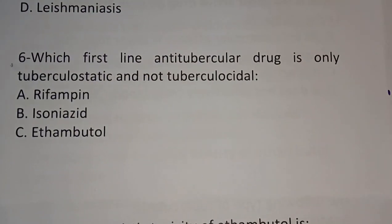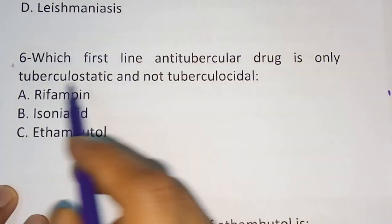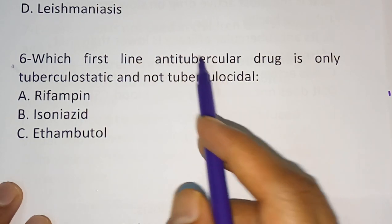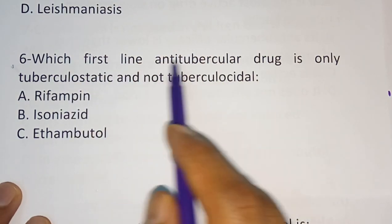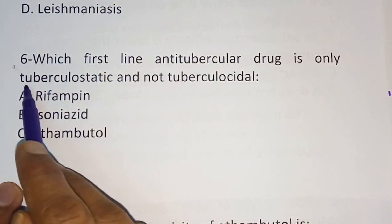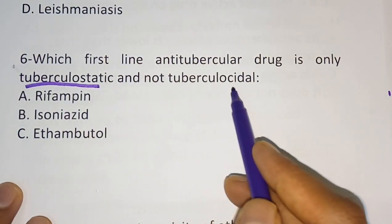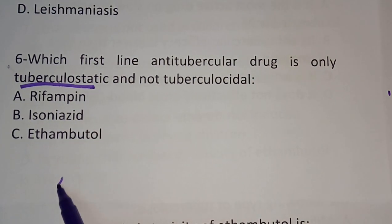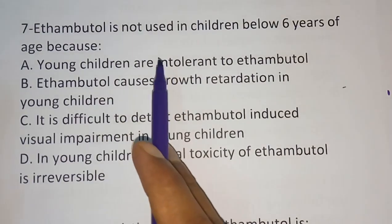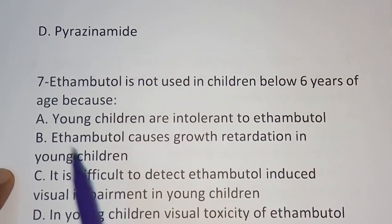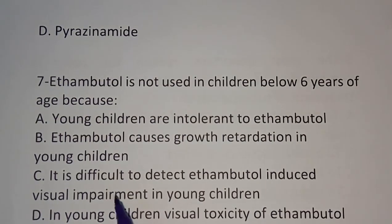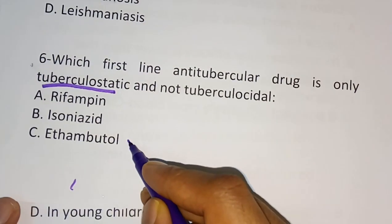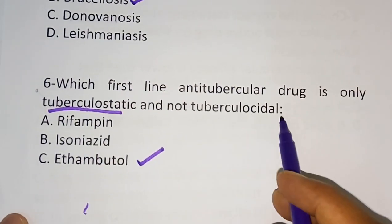Sixth question: which first-line anti-tubercular drug is only tuberculostatic and not tuberculocidal? Options are rifampicin, isoniazid, ethambutol, and pyrazinamide. The correct answer is option C — ethambutol. Ethambutol is tuberculostatic, not tuberculocidal.